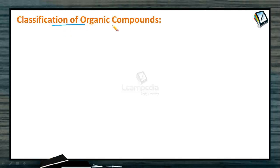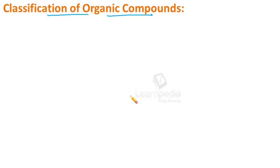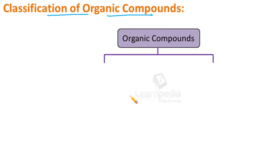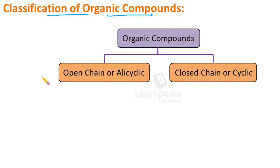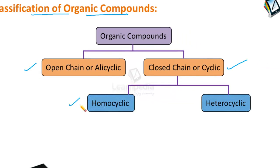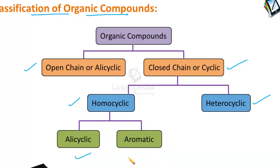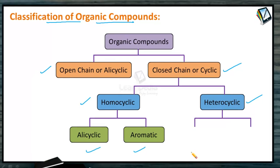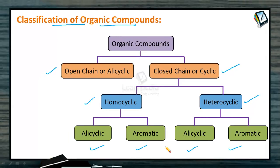Let's understand the classification of organic compounds. Based on their structure, organic compounds are basically divided into two different types: open chain and closed chain compounds. The closed chain compounds are further divided into homocyclic and heterocyclic, and both of these are individually divided into alicyclic and aromatic separately.